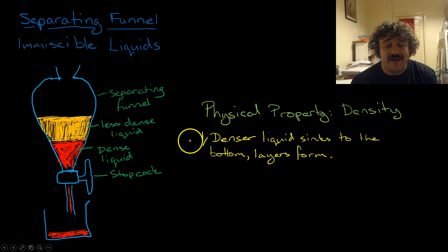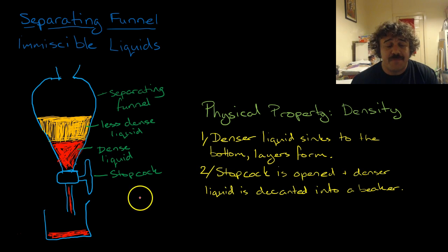The denser liquid sinks to the bottom, forming layers. The stopcock, which is this part here, is opened, and you simply decant off into a beaker the bottom layer.